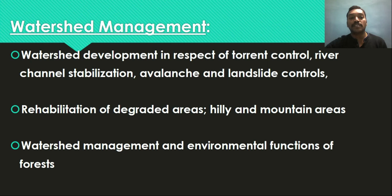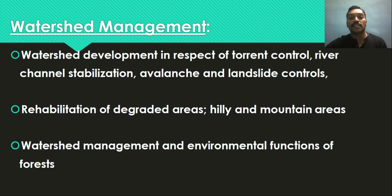Watershed development in respect to torrent control, river channel stabilization, avalanche and landslide control — these are different critical areas, such as avalanches in the Himalayas and torrent control and river channel stabilization as part of river ecosystems. How watershed development can help treat these problematic situations — landslides, avalanches, torrent control, river channel stabilization — and rehabilitation of degraded hilly and mountain areas will be studied. How interventions using different watershed approaches treat these degraded areas is a major focus.